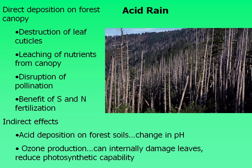When these weak acids are directly deposited on the forest canopy, the acid itself breaks down the waxy cuticle on the leaf, which can cause an immediate or direct impact on the plant, interfering with photosynthesis. Nutrients can also be leached from the canopy due to acid rain. Acid rain can disrupt pollination by altering flower structure. Some have argued that sulfur and nitrogen are nutrients and can actually improve the soil, which could be considered a perceived benefit.